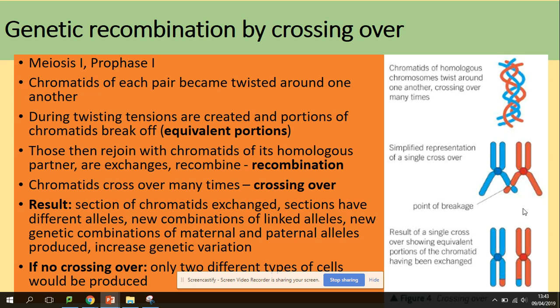So what is crossing over? Crossing over takes place in meiosis one, in prophase one. When the maternal and paternal chromosomes come closer, they twist around each other and break off parts of the chromatids to exchange them — the same portions are exchanged. This results in sections of chromatids being exchanged; those new exchange sections will have different alleles. New combinations of maternal and paternal alleles are produced, increasing genetic variation.